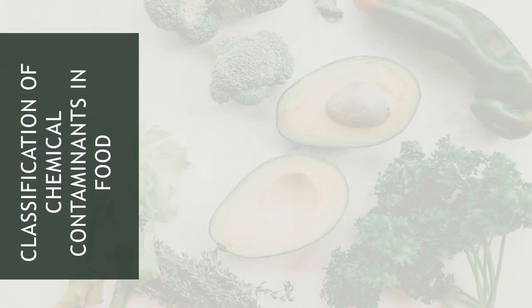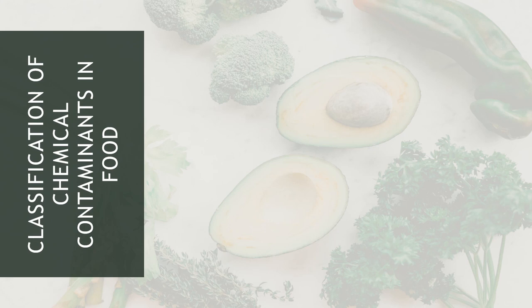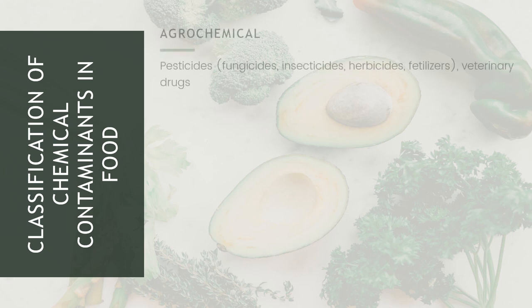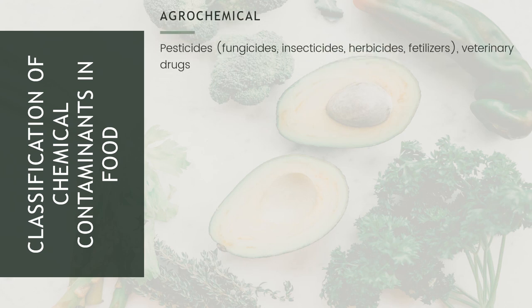Looking at the classification of chemical contaminants in food, there are four different types. First, agrochemicals — we have pesticides such as fungicides, insecticides, herbicides, and fertilizers, as well as veterinary drugs. Second, environmental and industrial contaminants, which include heavy metals like lead, cadmium, and mercury, PCBs or polychlorinated biphenyls, and dioxins.